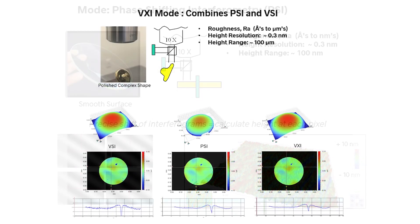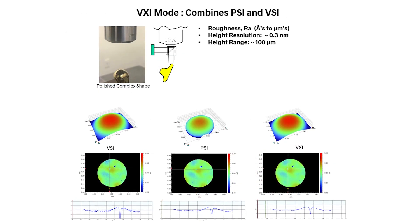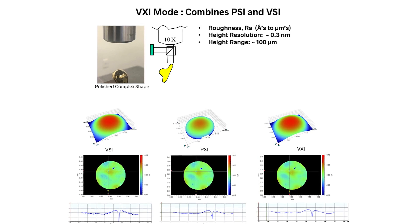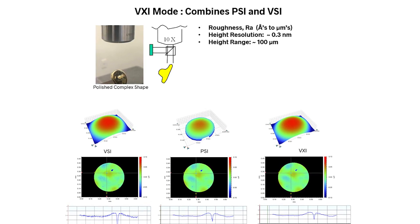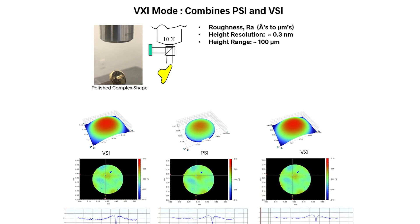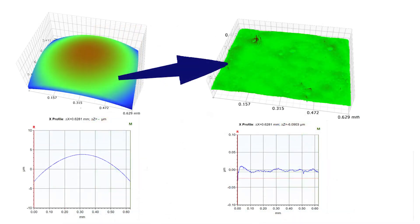As well as something I'm very excited about called VXI, which is a combination of phase shifting and vertical scanning. So we're able to measure literally sub-nanometer surface finish on curved parts and other types of surfaces - it just couldn't have been done a few years ago.